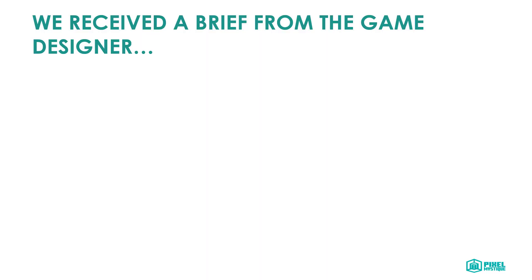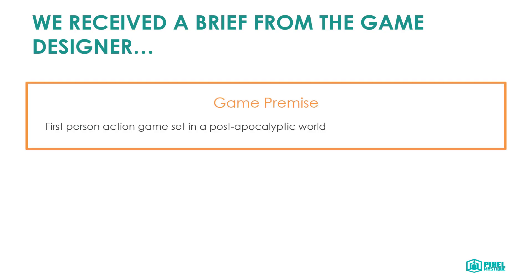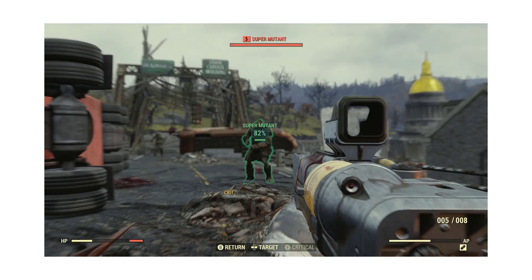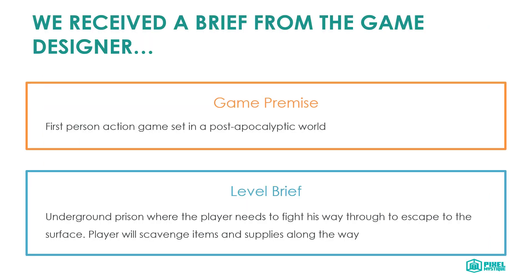Let me know in the comment section below how the roles are broken down in your studio. If you're a solo developer, welcome to the club. So imagine we just got the brief from the game designer, and the game premise turns out to be that this game will be based on a first-person action game set in a post-apocalyptic world. Fallout anyone? The level we are tasked to develop is an underground prison where the player needs to fight his way through to escape to the surface. Along the way, the player will scavenge items and supplies. So based on this information, we can then start to plan our level out.